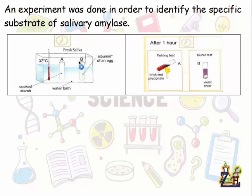We see that there are two tubes A and B containing both fresh saliva. The first one contains cooked starch while the second contains an albumin of an egg, and we have the temperature 37 degrees Celsius.